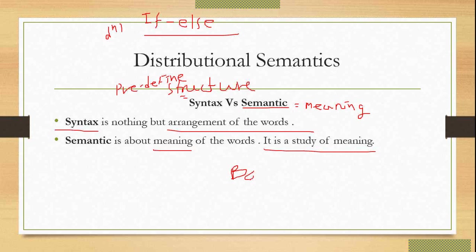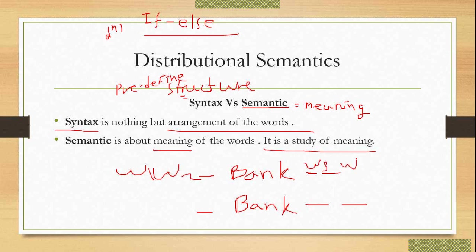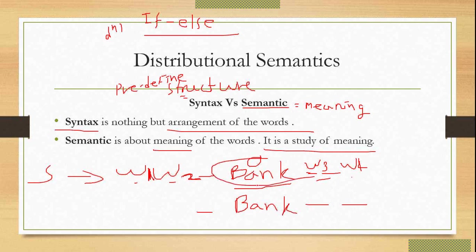Let us consider the word 'bank'. Both uses of 'bank' represent a different meaning in context with its previous and following words. So based on w1, w2, w3, and w4 — the surrounding words — the meaning of 'bank' is different. You cannot say that 'bank' means only the financial institution. So this keyword 'bank' is based on the context — what is the context of your sentence. The meaning of bank totally depends on the words on its left and right side.